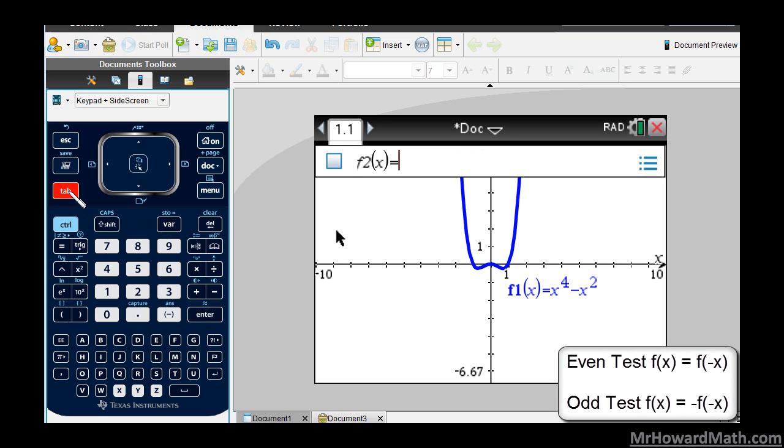I can hit tab, and that will drop this down so you can put your functions in. If I arrow up I'll see my first function, my f1 function, my f2 function.